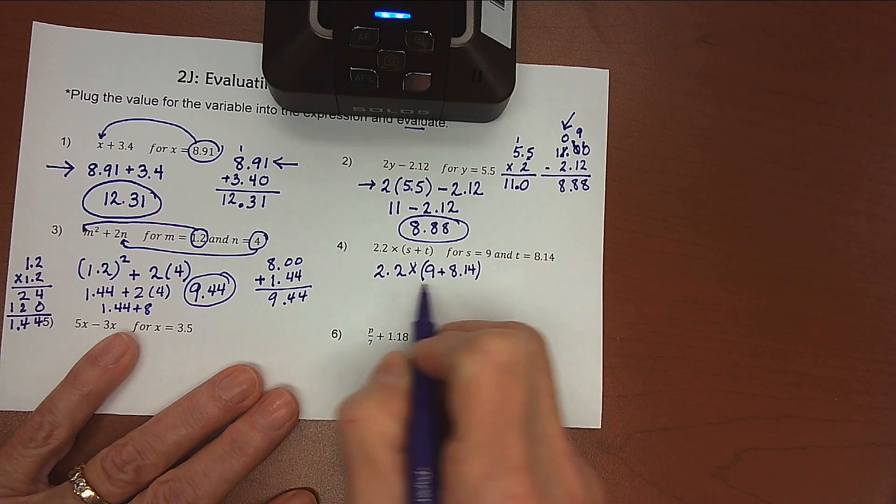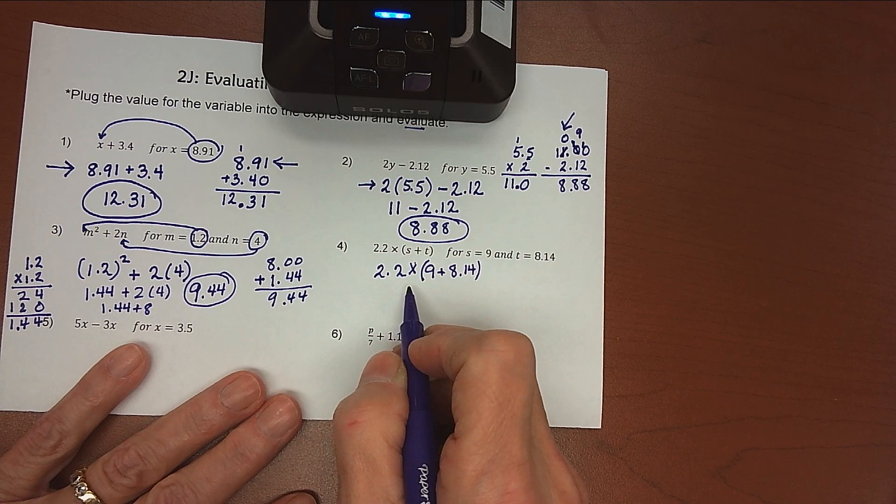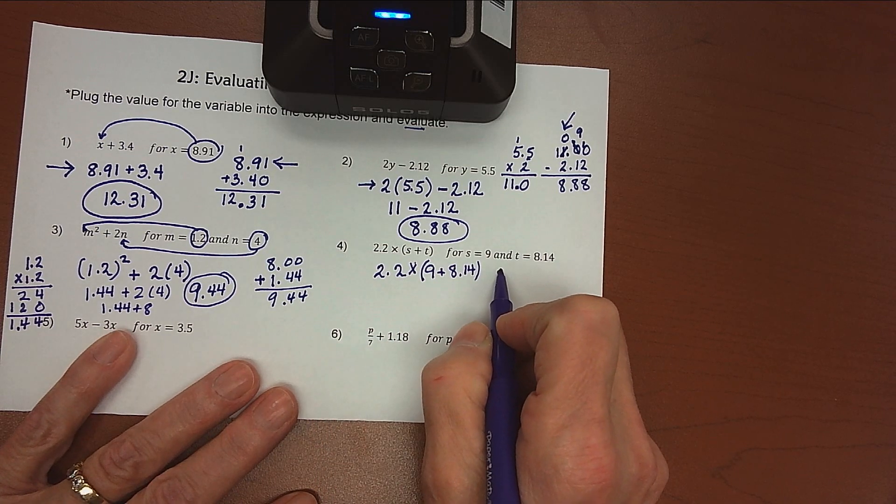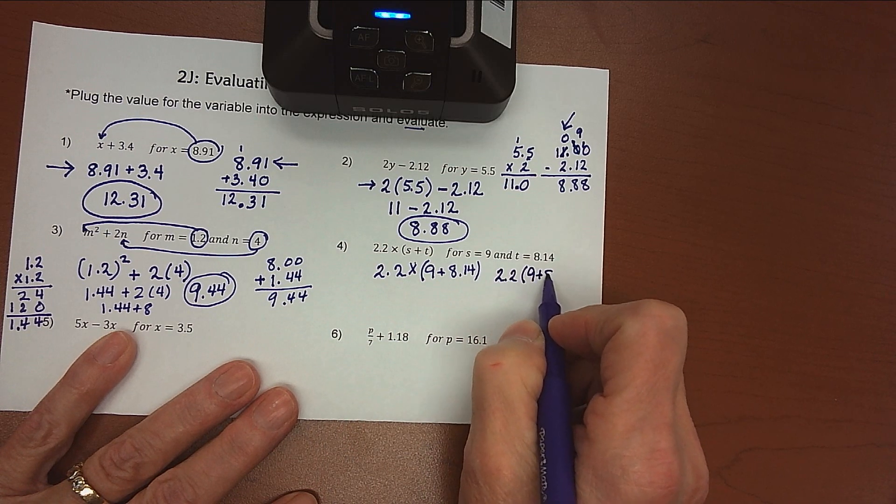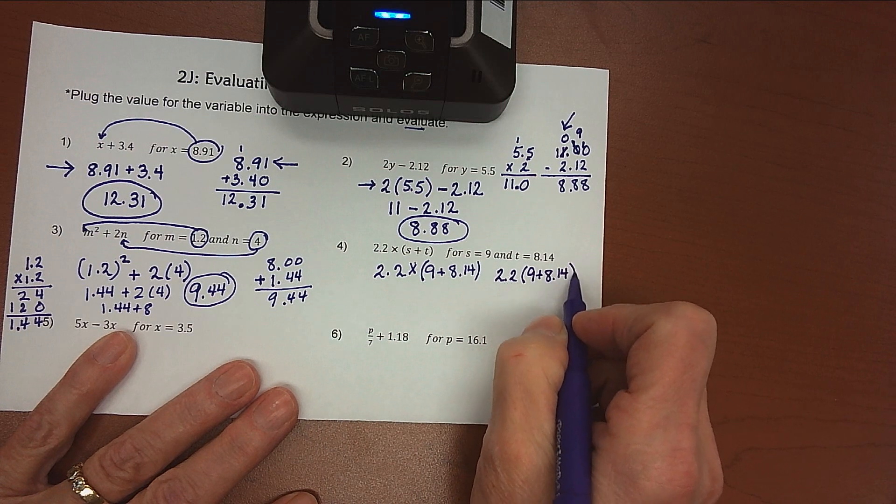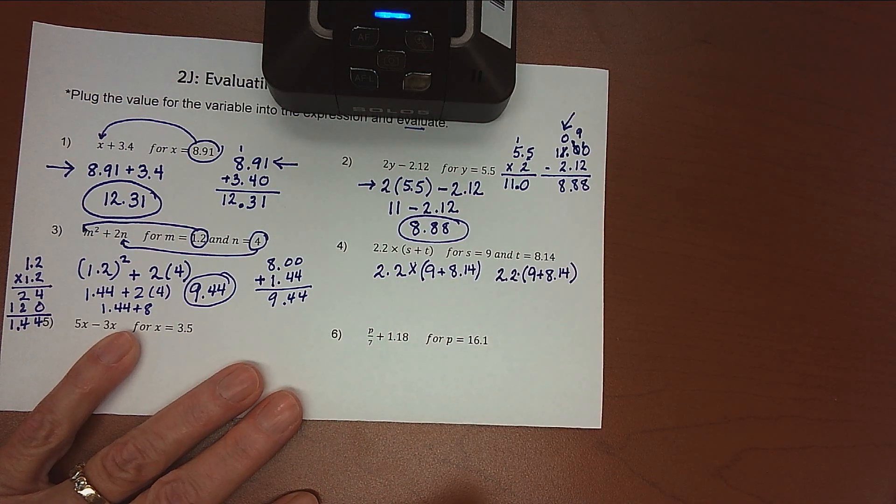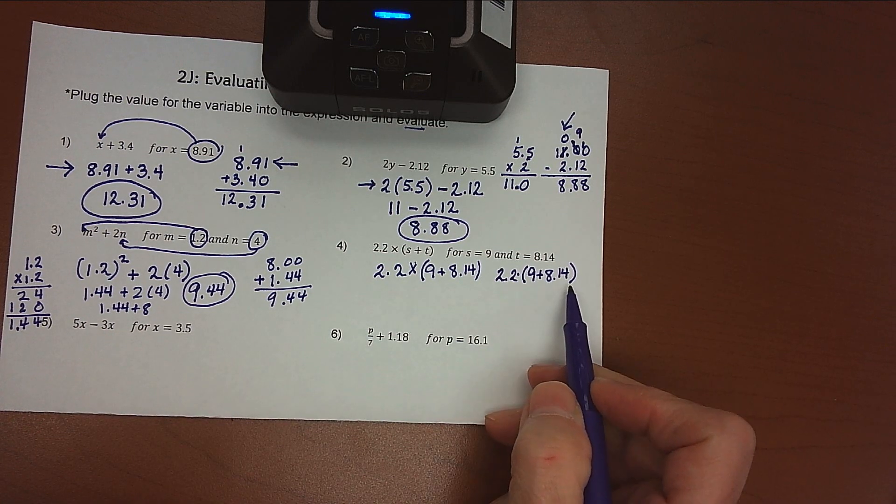Now, I could write this this way. That X to me is a little bit confusing because I look at that and I'm like, is that a variable? Is that a multiplication symbol? What is that? So another way to write this is 2.2 times 9 plus 8.14. You could even put a little dot there if you wanted to to show that that's multiplication. So according to my order of operations, I have to add what's in the parentheses first.